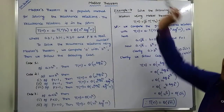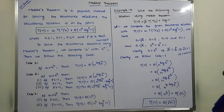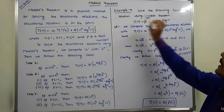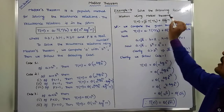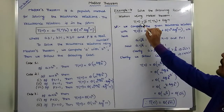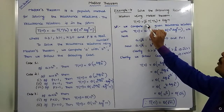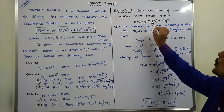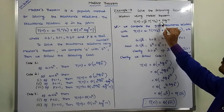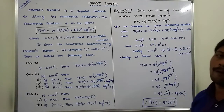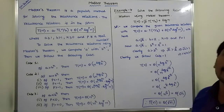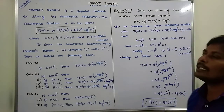This is Example 4. Solve the following recurrence relation using Master Theorem: T(n) = √2 · T(n/2) + log n. This is the given recurrence relation.